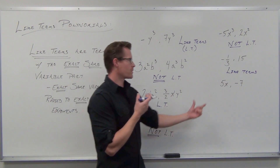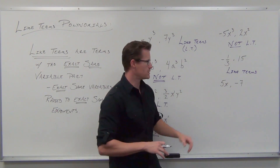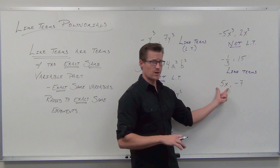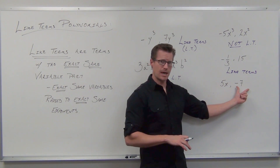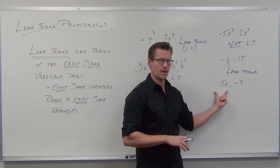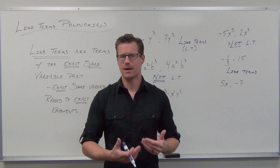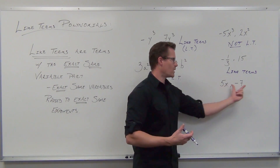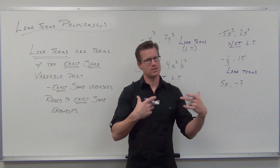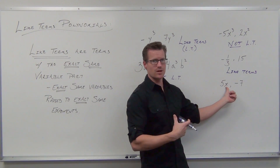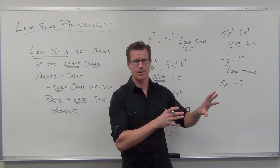Lastly, what are these two? Sometimes the simple things are what really trip us up. I still have two terms: one is a variable term, 5x, and the other is a constant term, negative 7. Can a variable term ever be a like term with a constant term? If like terms are defined as having the same variable part, then absolutely not. One of them has a variable, one doesn't. They're inherently not like terms. You can't be like terms unless you have exactly the same variables raised to exactly the same powers. These are not like terms.